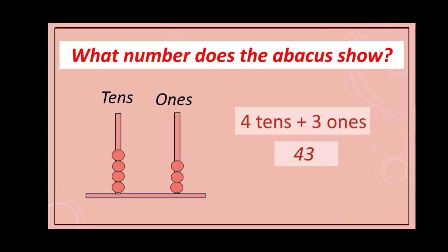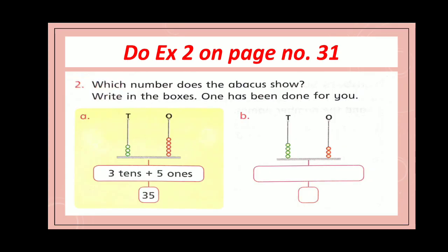Now open page number 31 and do exercise 2: Which number does the abacus show? Write in the boxes. One has been done for you. Now complete the remaining parts.